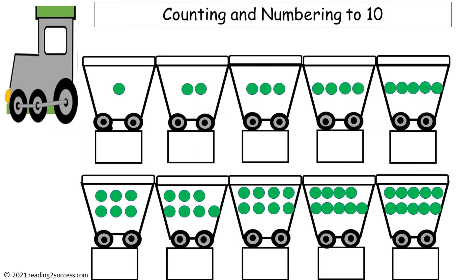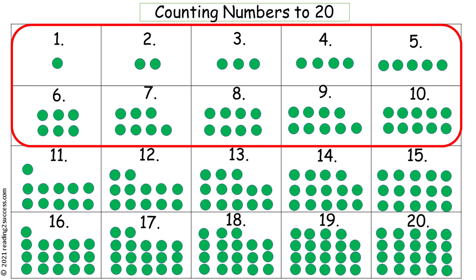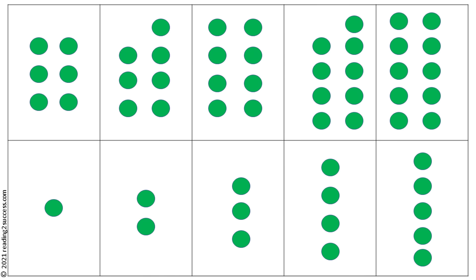For kids to understand the concept of addition, they need to understand the amount each number represents. In this activity they are to write the correct number of circles in each of the parts of the train. This is a completed example. If kids need additional support to complete the activity, review the resource chart with them and have them review the flashcards representing numbers 1 through 10.